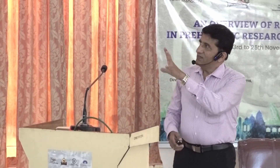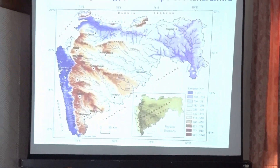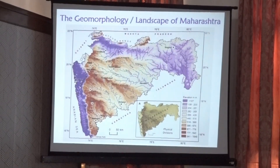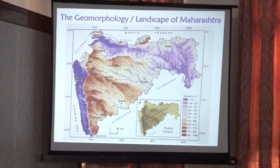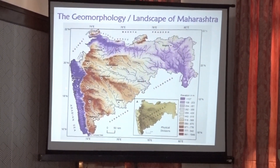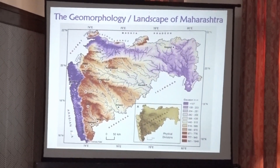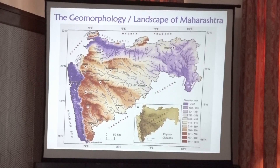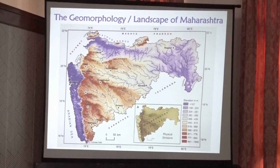As far as the landscape of Maharashtra — that is the geomorphology of Maharashtra — perhaps many of you are aware, it has been divided into three parts: number one is the Konkan lowland or Konkan plain; number two is the Maharashtra plateau; and number three is the Western Ghats. This is the landscape of Maharashtra known to everyone.